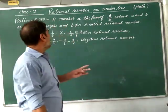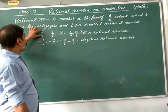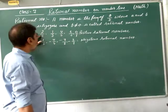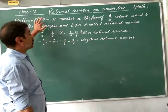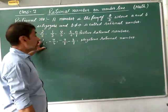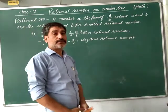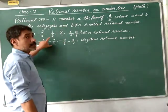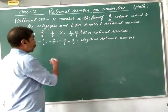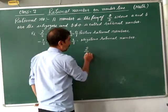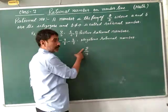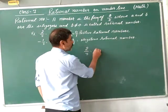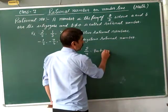A positive rational number is one where both integers are positive. For example, 2 by 5 is a positive rational number because both 2 and 5 are positive integers.